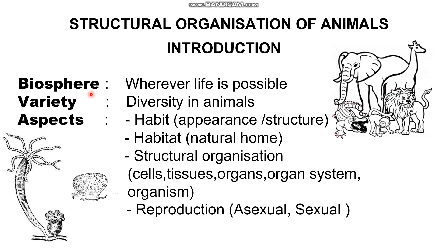First, what is biosphere? Bio means life or living. So wherever life is possible, there are organisms. That place is called biosphere. In the biosphere, there are different types of plants, animals — all kinds of variety and diversity. So, we are going to learn about animals in this chapter.